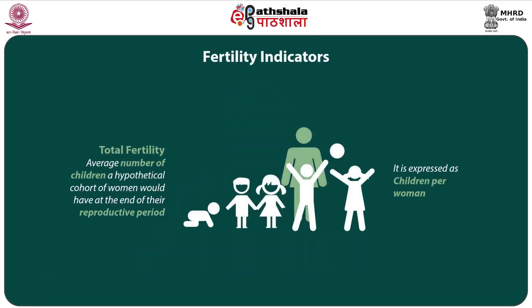For instance, in India the statutory age at retirement is 60, meaning all persons who reach 60 cannot continue to work and are entitled to benefits such as pension and superannuation. Let us move to fertility-related indicators. Total fertility rate refers to the average number of children a hypothetical cohort of women would have at the end of their reproductive period, if they were subjected throughout their lives to the fertility rates of a given period and were not subject to mortality. It is expressed as number of children per woman.